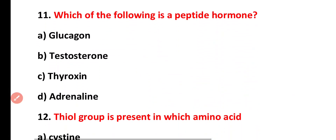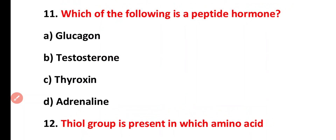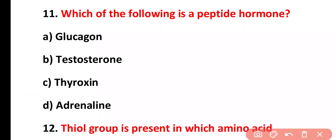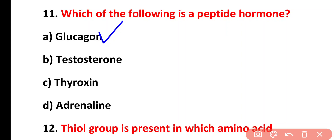Question eleven: which of the following is a peptide hormone? Options: glucagon, testosterone, thyroxine, adrenaline. The correct answer is option A. Glucagon is a hormone which is peptide in nature.